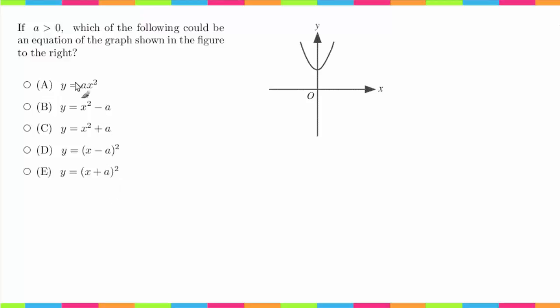It doesn't matter what that a number is—well it does—but basically it's going to follow a certain pattern. Let's look at the first one for example, ax squared. This a is going to affect how wide or skinny the parabola is.